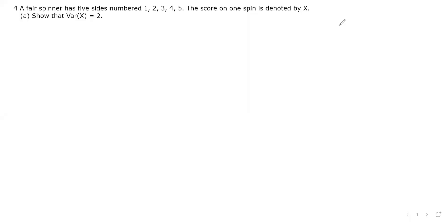We discuss question 4 of A-level mathematics paper 6, probability and statistics 2, in May or June of year 2020. A spare spinner has five sides numbered 1 through 5. The score on each spin is denoted by x. The values of x are 1, 2, 3, 4, and 5.